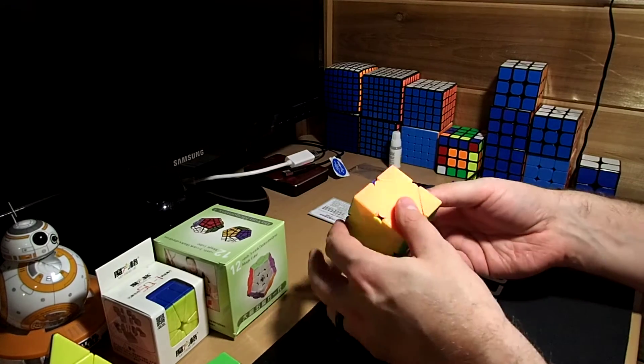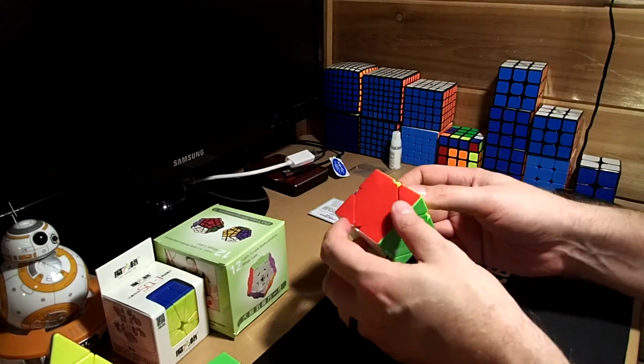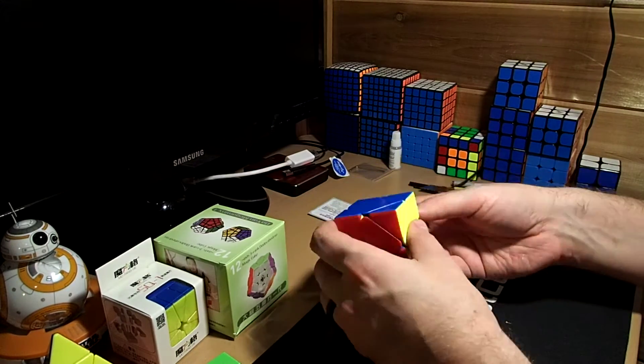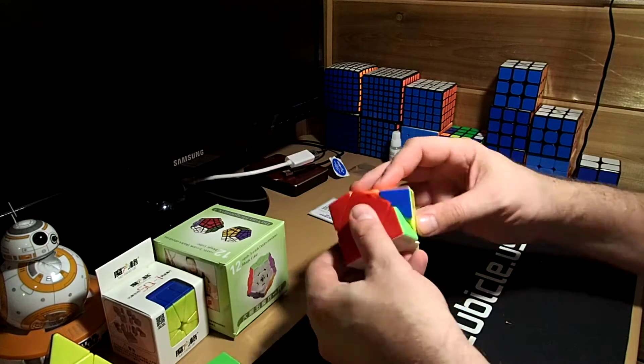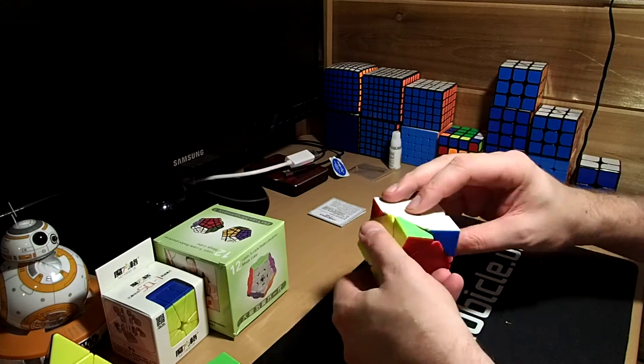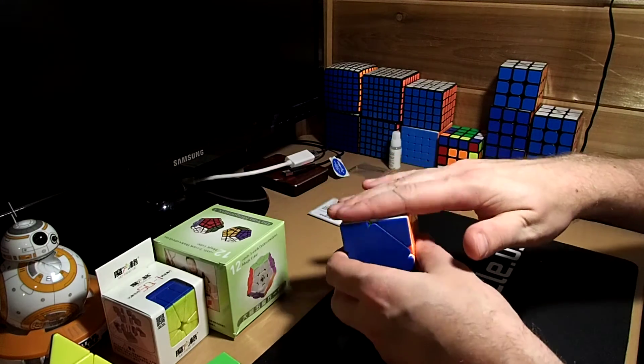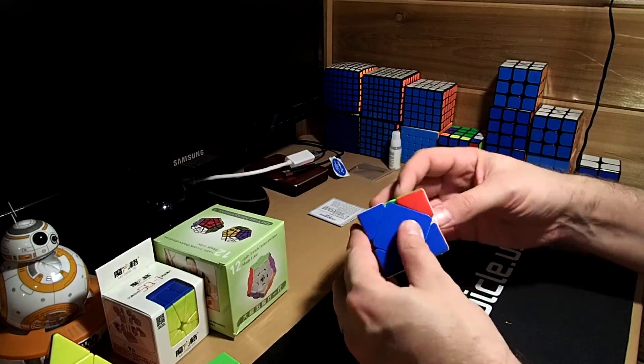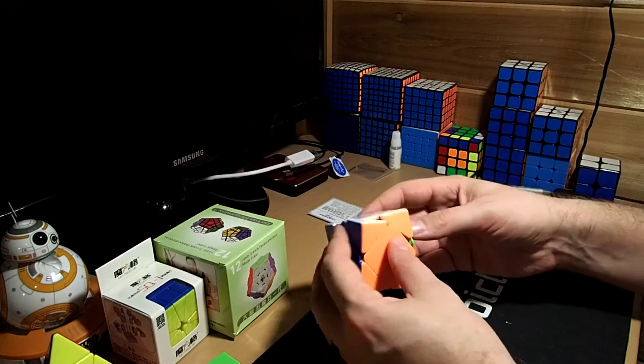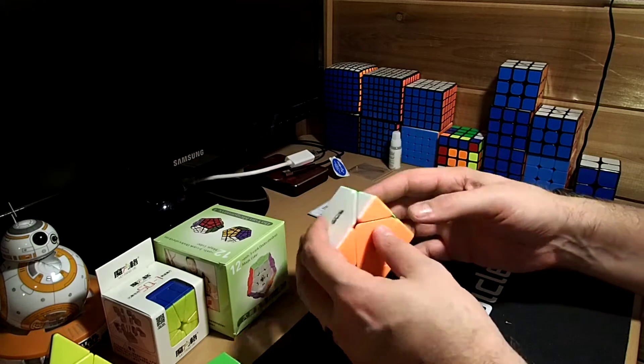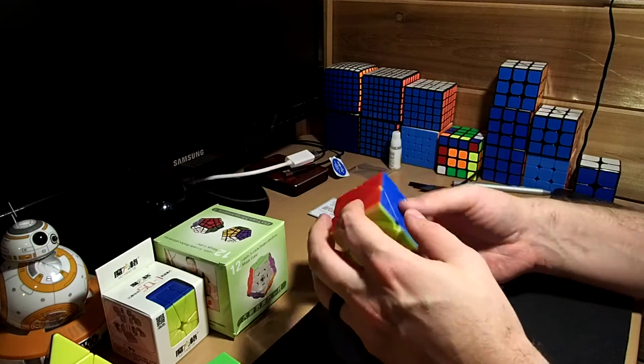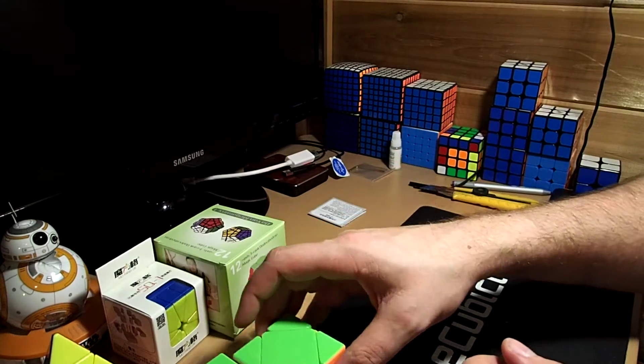Skewb. Again, a puzzle that I haven't solved in a very long time. Honestly, I don't even really remember it. I would have to play around with this a while before I figured it out. I'd have to just brute force it with commutators and stuff. Feels very good though. Feels much better than my other one. I have an old Lan Lan Skewb that feels terrible. And it has a black face instead of a white. So this feels much nicer. This will actually encourage me to practice and get better at skewb, or I guess get good at it at all. Very nice.